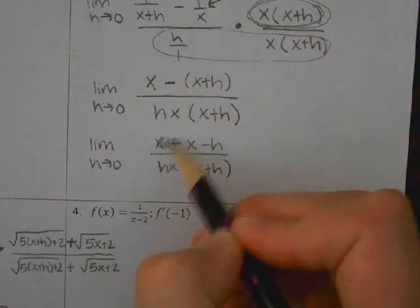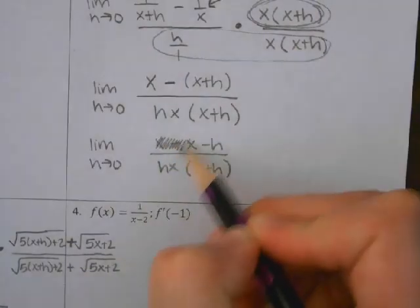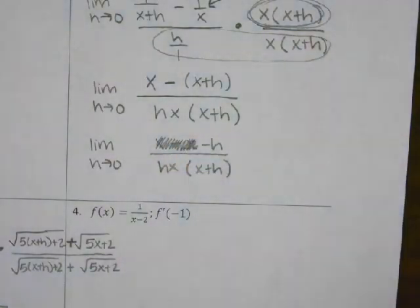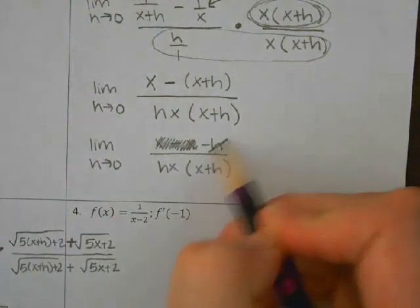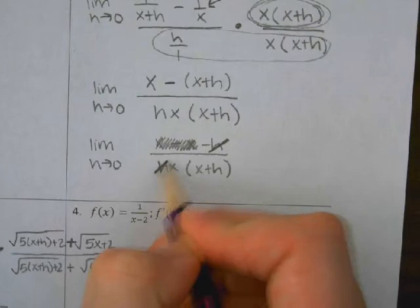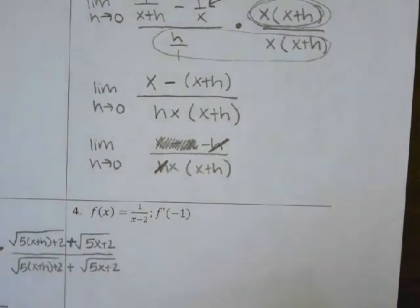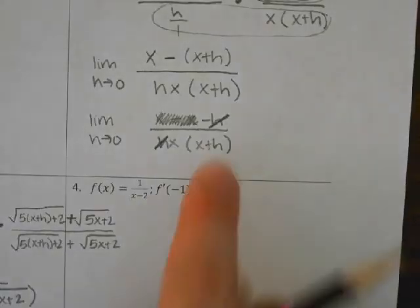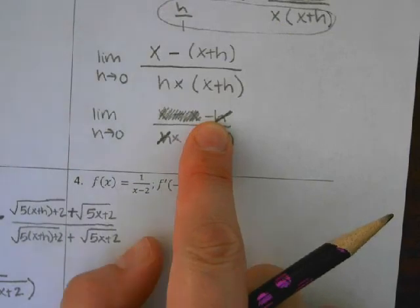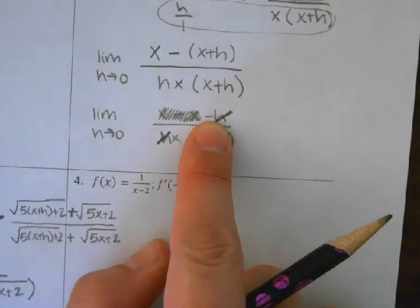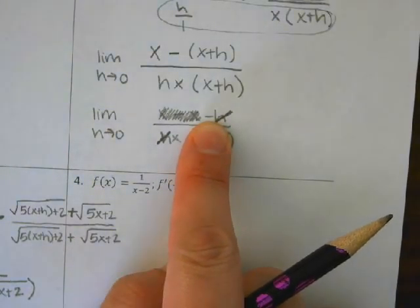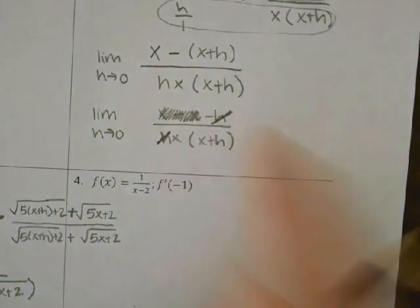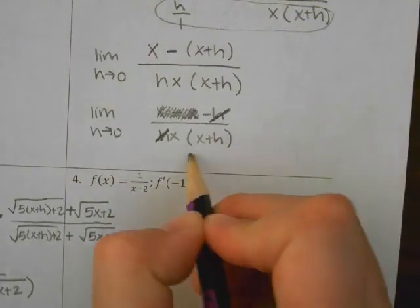So what should I do on the top? The x's cancel — x minus x. And now what do you see? The h. So this h can cancel with the h on the bottom. I still have that negative — the negative was a coefficient for the h — so what number does that leave on the top? Negative 1.